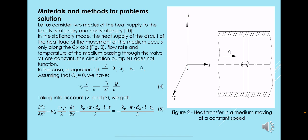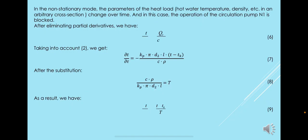Flow rate and temperature of the medium passing through the valve V1 are constant. The circulation pump N1 does not function. In this case, in equation 1, assuming that qv is near zero, we have this equation you can see here, number 4. Taking into account equations 2 and 3, we get this.